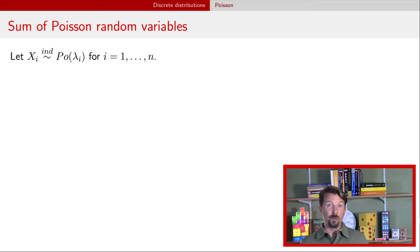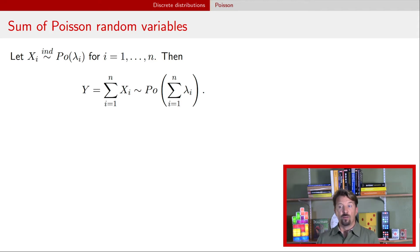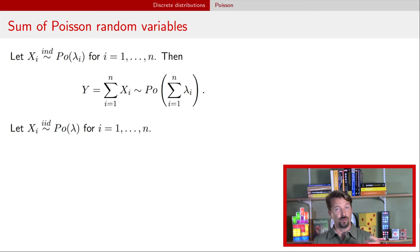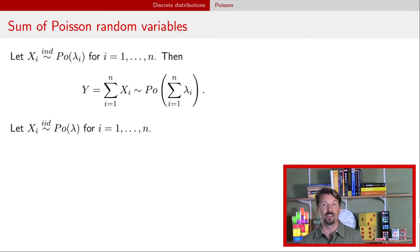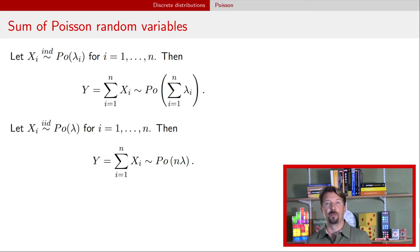There are nice properties of Poisson random variables when adding them together. If you have independent Poisson random variables each with their own rate parameter lambda_i, then their sum is another Poisson random variable whose rate parameter is the sum of the individual rate parameters. A special case is when all random variables are identically distributed — an independent and identically distributed sequence. In that situation, the sum of n such Poisson random variables is a Poisson with mean n times lambda.